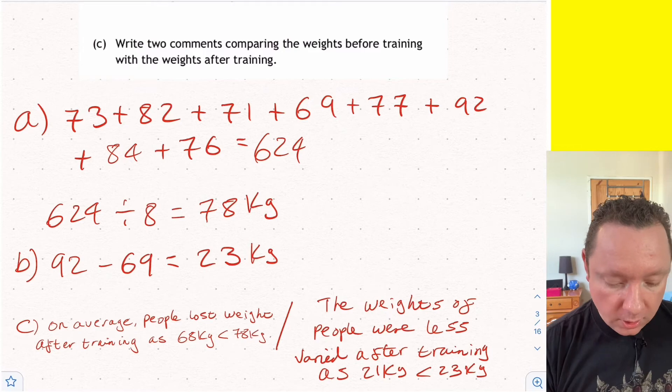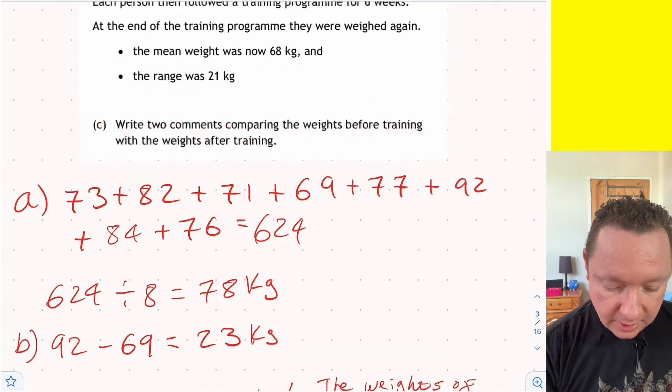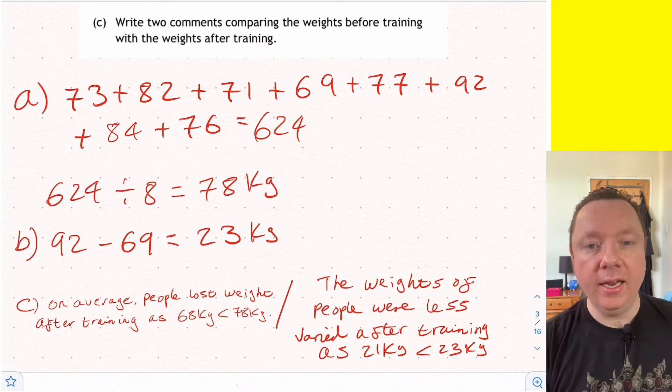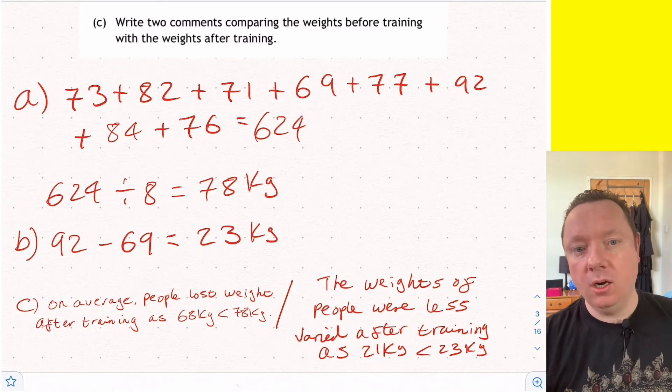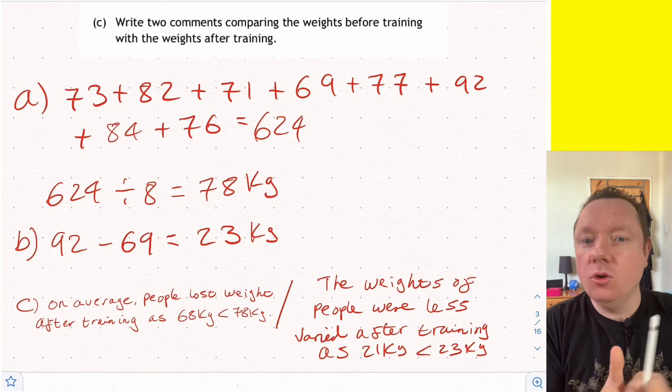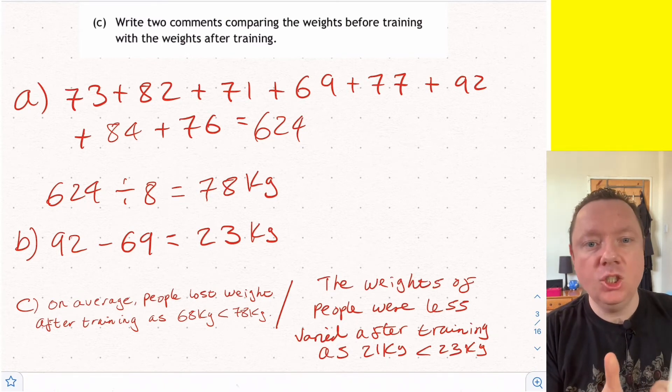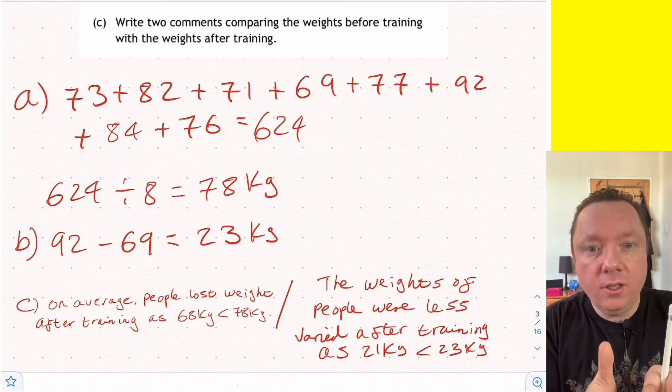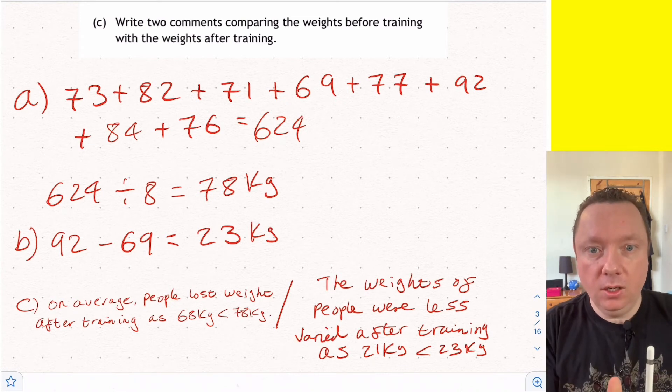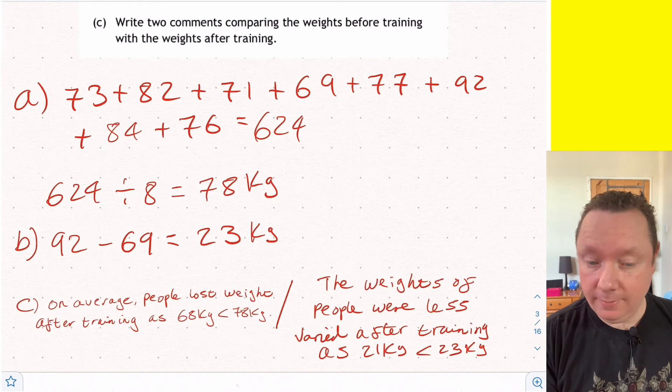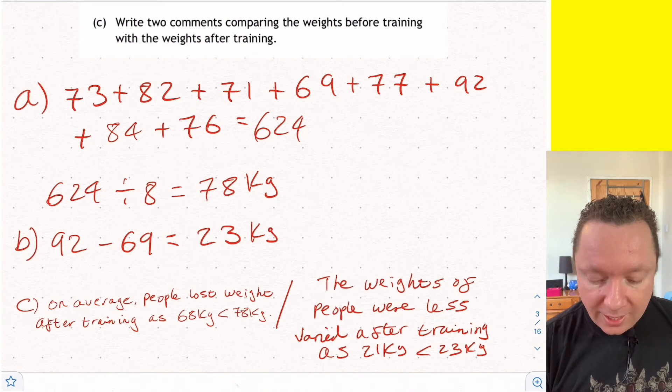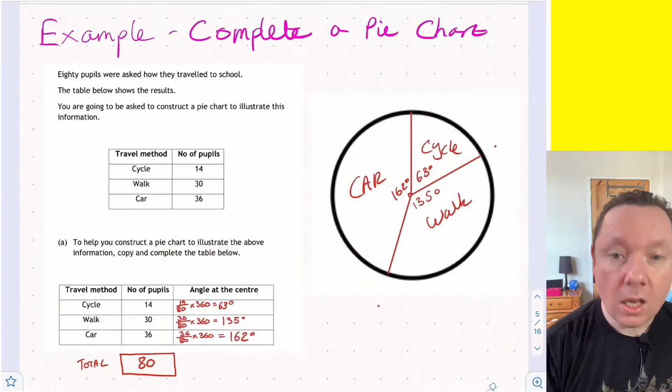Let's look at our second statement. The weights of the people were less varied after training as 21 kilograms is less than 23. When you're comparing the range of numbers, it's how spread out those numbers are. If the range is very, very small, the numbers are not spread out at all. There's no variation in the numbers. If there's a massive spread of numbers, there's a massive variation. So the smaller the range, the less varied the numbers are. The bigger the range, the more varied.